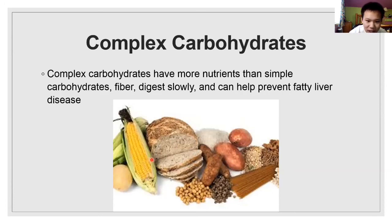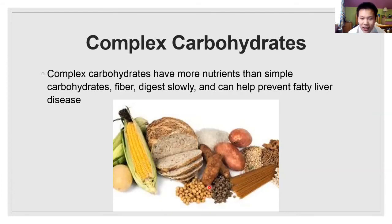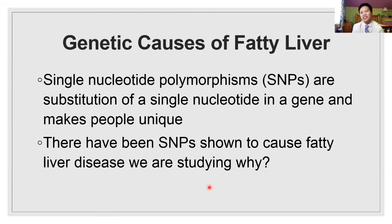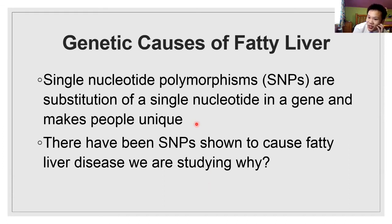So foods with complex carbohydrates include corn, breads, wheats, potatoes, pasta, and beans. So you can control your diet and your exercise, but something that you can't control is your genes. And so actually what I study in lab are the genetic causes of fatty liver disease. You may have learned from your classes that your genes are encoded by nucleotides - DNA in your body.